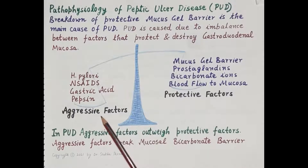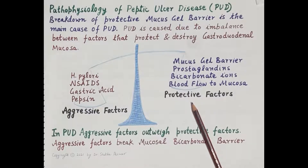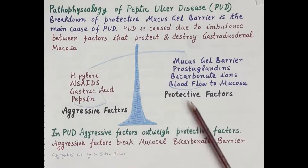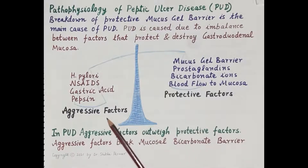Aggressive factors are those that break down the mucus gel layer, while protective factors are those that preserve and protect it. Peptic ulcer disease is caused by an imbalance between aggressive and protective factors — in peptic ulcer disease, aggressive factors outweigh the protective factors.